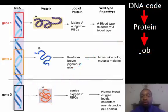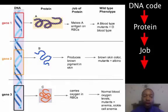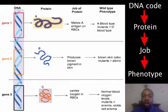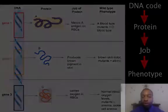Putting the pieces together, the protein does a particular job, and depending on whether — or how well — it does that job, the result is a particular phenotype or trait. DNA indirectly codes for our traits because it directly codes for proteins, and proteins do their jobs, which produce our traits.